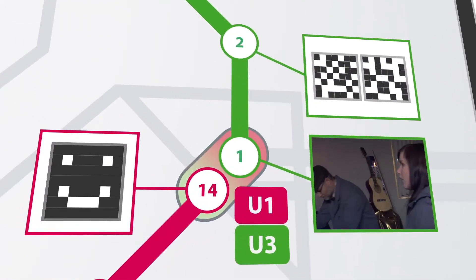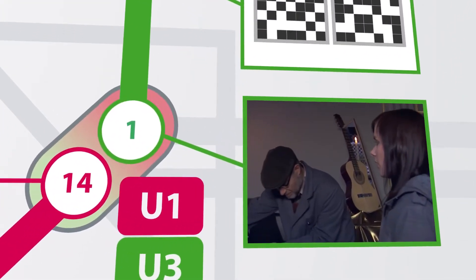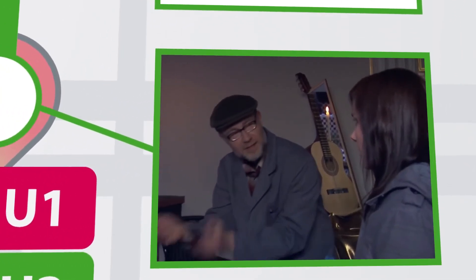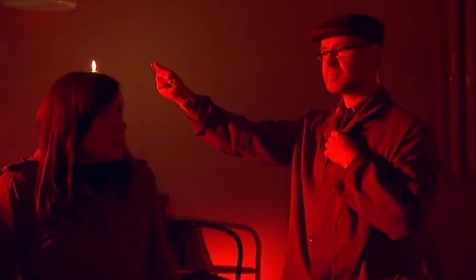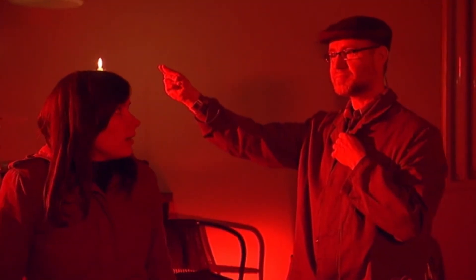However, first of all, let us at the first station take a look at the permutation of information, taking simple examples based on pictures and music.